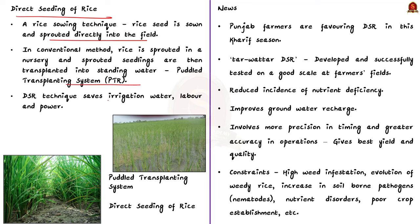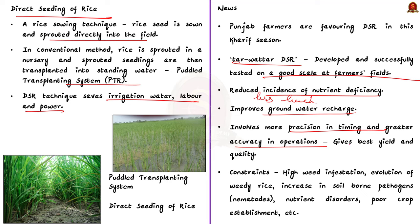DSR saves irrigation water, labor, and power. It is less time-consuming and labor-intensive than the conventional practice. The DSR technique, called Tar-Water DSR, has been developed and successfully tested at the farmer's field scale. There is a reduced incidence of nutrition deficiency, especially iron, because of lesser leaching of nutrients and deeper root development. It also improves groundwater recharge and involves more precision in timing and greater accuracy in operation, giving the best yield and quality. However, constraints associated with DSR include high weed infestation, evolution of weedy rice, increase in soil-borne pathogens namely nematodes, nutrient disorder, poor crop establishment, lodging, incidence of blast, brown spots in leaf, etc.